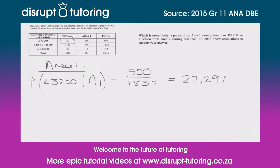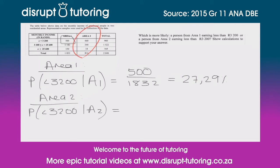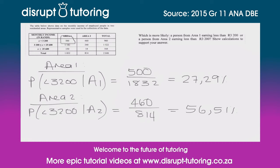Then let's cast our attention over to area two. What is the probability that a person earns less than three thousand two hundred rand, given that they come from area two? So we can see that there are 814 people that come from area two, and there are 460 people that earn less than 3200. So it's going to be 460 over 814, and when we plug that into our calculator we're going to get 56.51%.